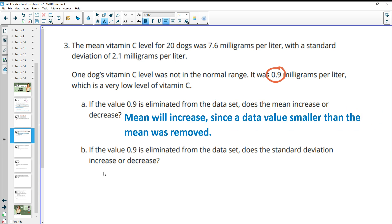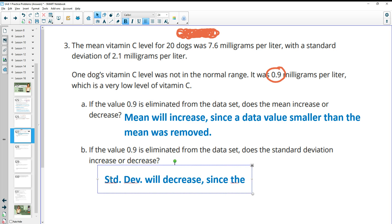If the 0.9 is eliminated from the data set, does the standard deviation increase or decrease? So if you think about it, we have kind of a bunch of data over here at like 7.6, and then we have this one way down here at 0.9. So if most of the data is centered over here, and then we eliminate this, now our data is going to be closer together. So the deviation is going to decrease. So standard deviation will decrease since there is less variability when 0.9 is removed.